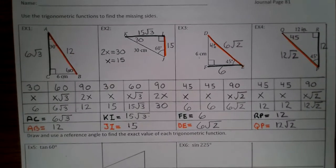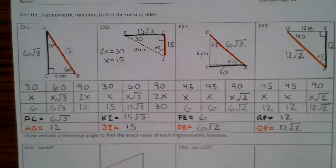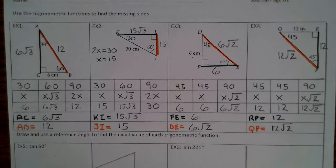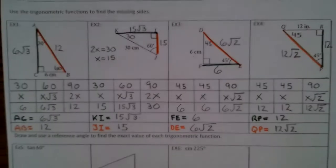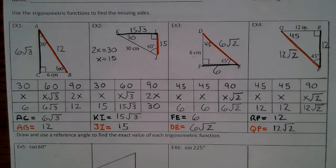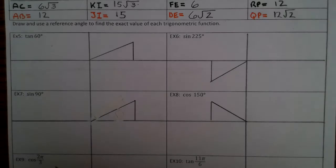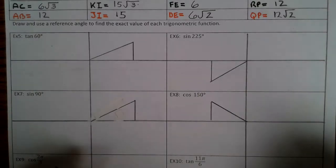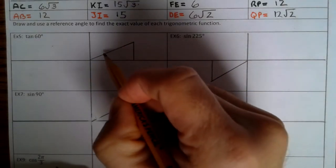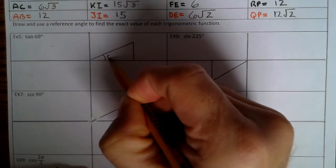Go ahead and finish up examples 1 through 4. Now let's look at example 5: draw and use a reference angle to find the exact value of each trigonometric function. Tangent of 60 degrees. We know that 60 lies between 0 and 90, so this is 60 degrees, making this 30 degrees.